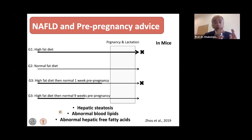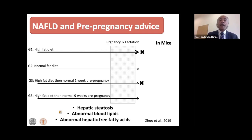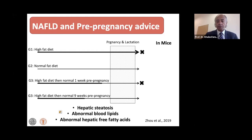They assessed offspring for hepatic steatosis, abnormal blood lipids, and hepatic free fatty acids. The abnormalities were only observed in groups one and three — the ones on high-fat diet throughout, and those who switched to normal diet only one week before pregnancy, not giving enough time for things to stabilize. However, if animals were fed a normal fat diet, or even if they had bad habits but were switched to a good diet a few weeks before pregnancy, the outcome seemed to be fine.